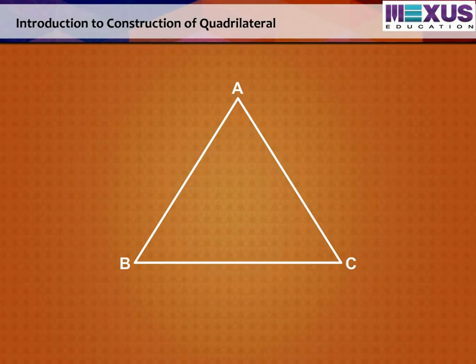We know that a triangle has three sides and three angles, and to construct a triangle, we require at least three measurements, including sides and angles of a triangle.